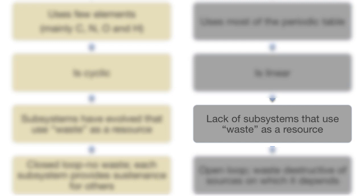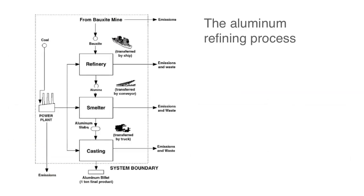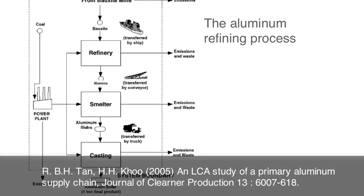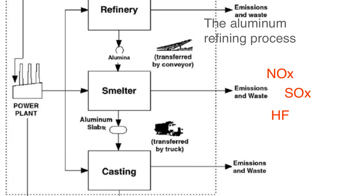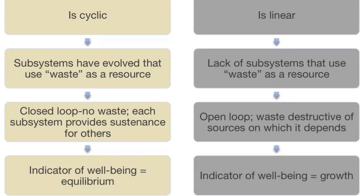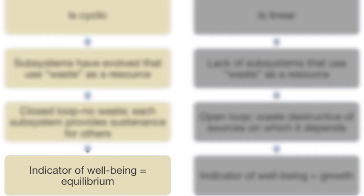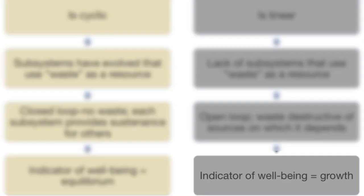Industrial systems have waste streams that are toxic and destructive to the sources on which they depend. For example, the current process of refining aluminum from its ore results in gaseous emissions to the air that become acid rain in the local region. The acid rain is toxic to life forms. In the natural system, the indicator of well-being is equilibrium in the system.